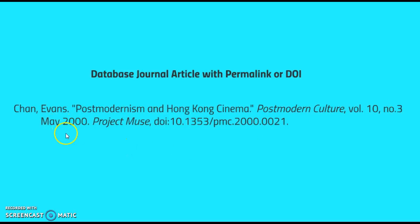Then include the publication date for the article and follow it with a period. Next, include the database name in italics followed by a comma. After the database name, add a stable URL or a DOI and follow it with a period. These are the types of links which will allow readers to easily access the electronic article.